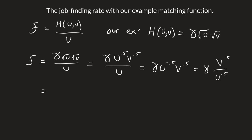We can combine those because they have the same exponent. Both have 0.5, so we can combine v and u to get gamma*(v/u)^0.5.